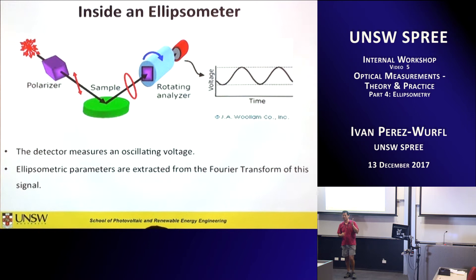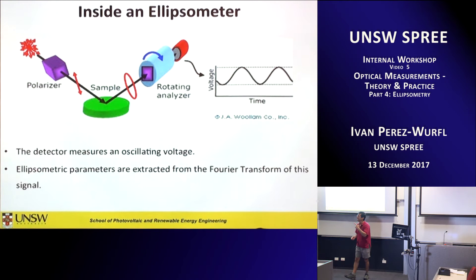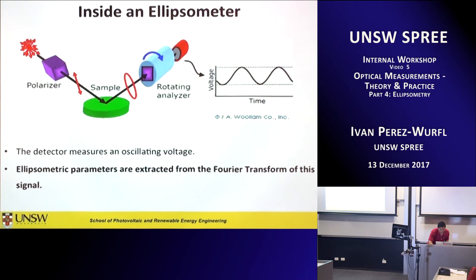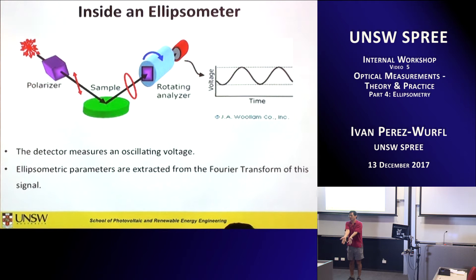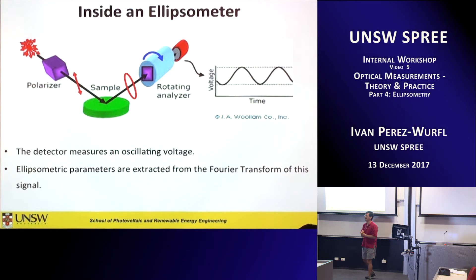On one side of the ellipsometer you have the polarizer. For this particular instrument, it uses linearly polarized light for the input, at 45 degrees, so you get exactly the same amount of S and P coming in. On the other side you have the analyzer, which is essentially a polarizer that is rotating. As the polarizer rotates, you are looking at the amplitude of the polarization vector. It forms a sinusoidal wave that you fit with a Fourier transform, and from there you get the offset, peaks, and valleys — from which you extract the information.